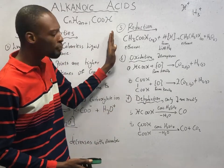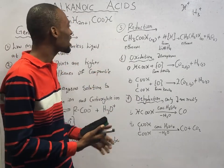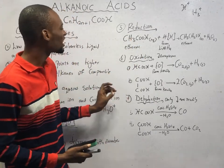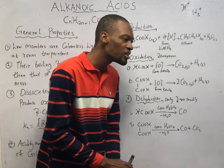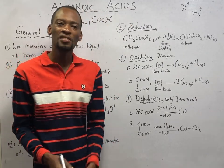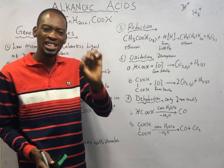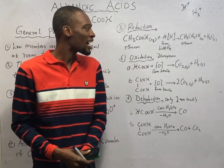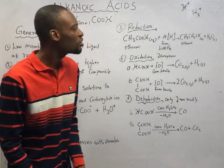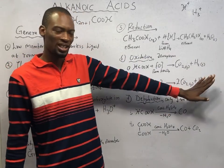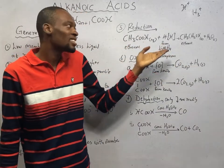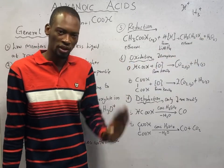Another property of carboxylic acids is reduction. Alkanoic acids are not easily reduced — it is very hard to reduce them. But under the influence of a strong reducing agent like lithium tetrahydridoaluminate (LiAlH₄), they can be reduced to form an alkanol and water. For example, ethanoic acid can be reduced to ethanol and water.